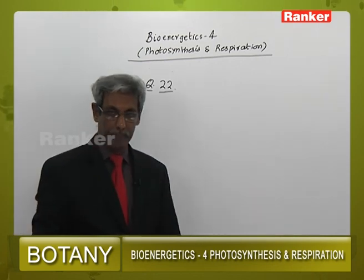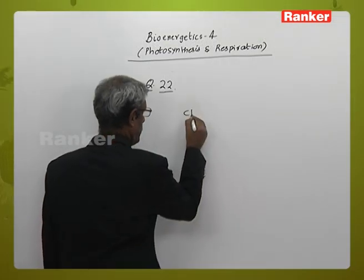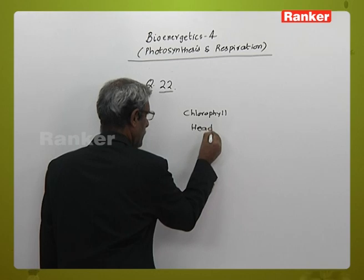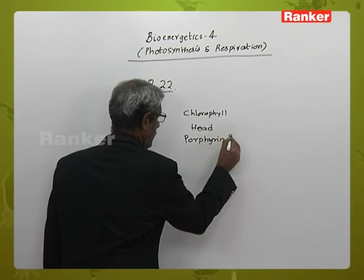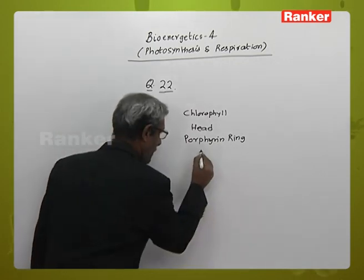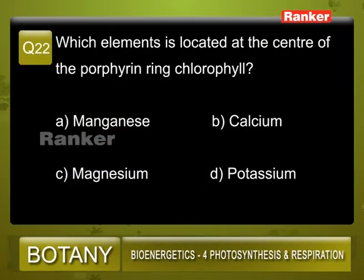Question number 22: Which element is located at the center of the porphyrin ring of chlorophyll? A: manganese, B: calcium, C: magnesium, D: potassium. The chlorophyll head is made up of a porphyrin ring, which is always associated with magnesium (Mg). The right answer is C.